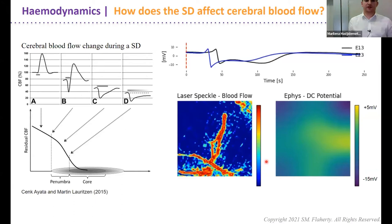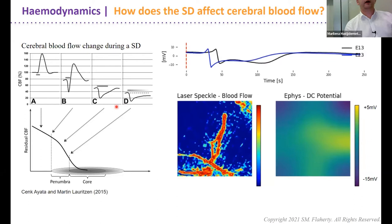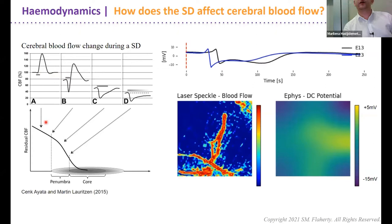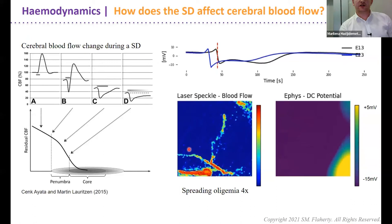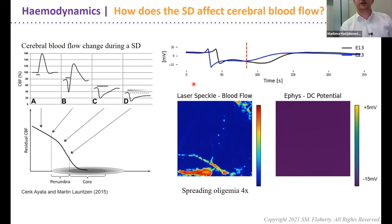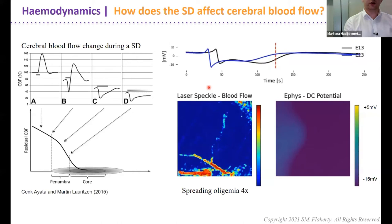Blood flow post ischemic stroke is very complex and dependent on which region you're in — core, penumbra, or healthy tissue. Closer to the core, you see vasoconstriction with no return to baseline, depicting tissue on the verge of death. Moving towards healthy tissue you see vasodilation that recovers to baseline. Looking at a single vessel above the array, as the depolarization occurs you see vasoconstriction, and once the tissue repolarizes, blood flow returns to normal.